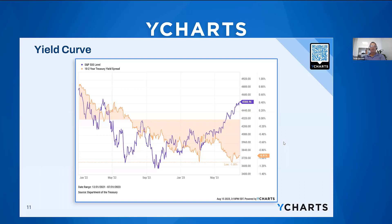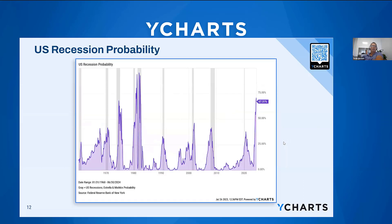This slide features the Estrella and Mishkin depiction — a popular recession predictor. The gray bars are recessions, and the picture would suggest the probability is quite high now. I'd love your thoughts, and especially on a term you've coined: rolling recessions.